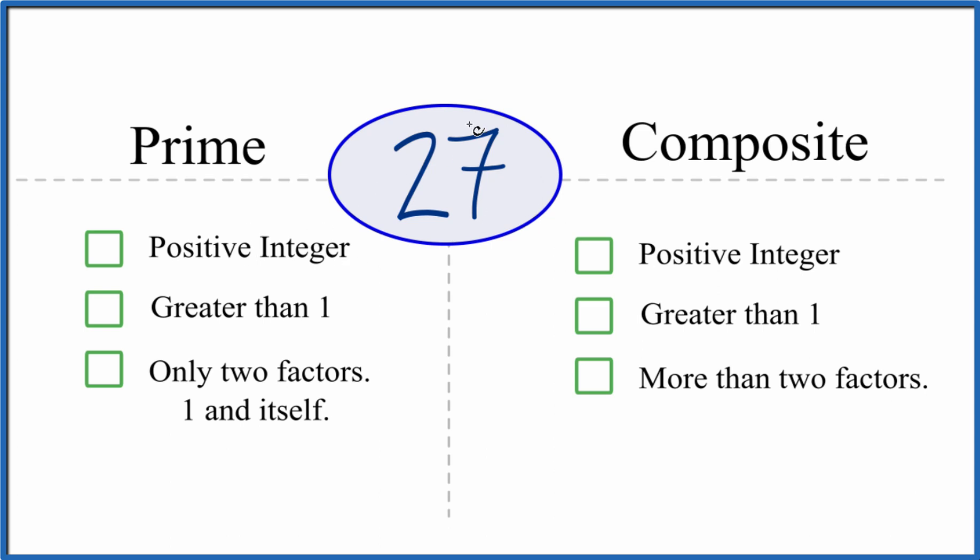So is it a positive integer? It's a positive number, it's a whole number, so yes. Is it greater than 1? 27 is greater than 1.